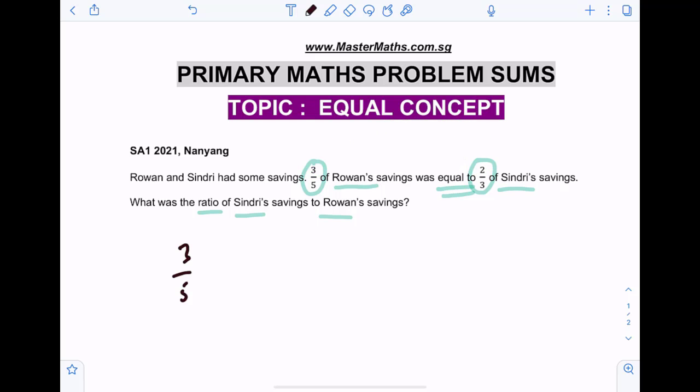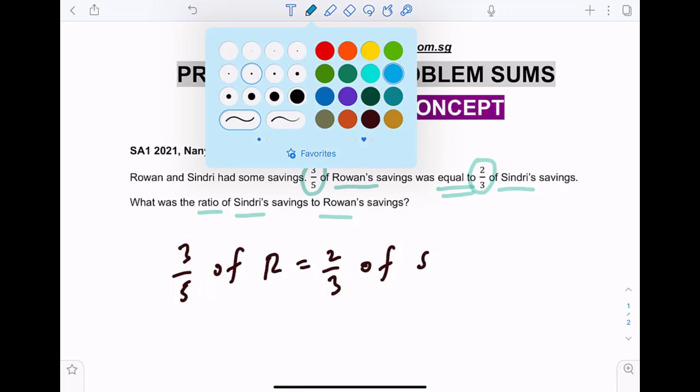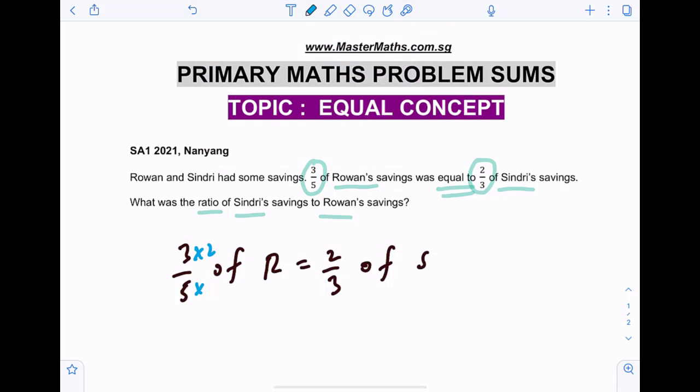So three over five of Rowan is equal to two-thirds of Sindri. So three and two, make it into the same common multiple. So times two, times two, times three, times three. So thereafter, we will get six out of ten of Rowan is equal to six out of nine of Sindri.